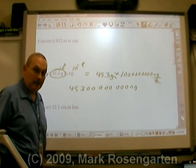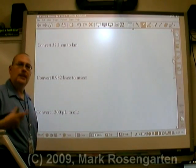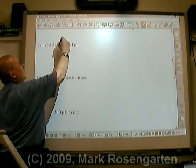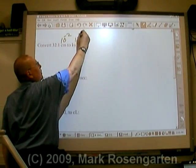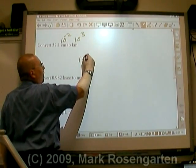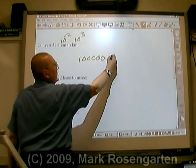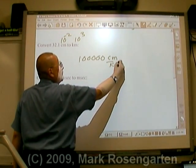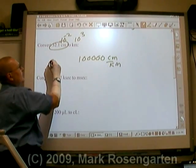To convert centimeters into kilometers, all we have to do is look up the factors of each one. Centi is 10 to the negative second. Kilo is 10 to the third. Five powers of 10 difference. Centi is smaller, centimeters per kilometer. The information we're given, 32.1 centimeters.